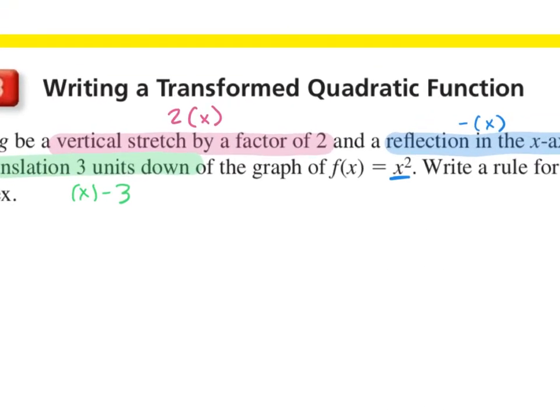So now we need to apply all three of these to our x. We're lucky here — all three things are happening outside of our parentheses. So we just have our x squared, and then we multiply the front by negative 2, and then subtract 3. So our g of x is negative 2x squared minus 3.